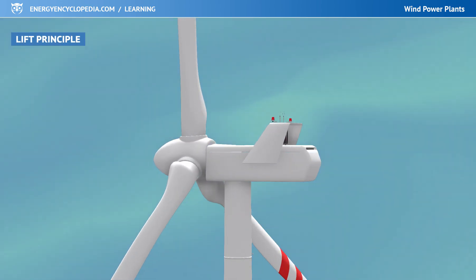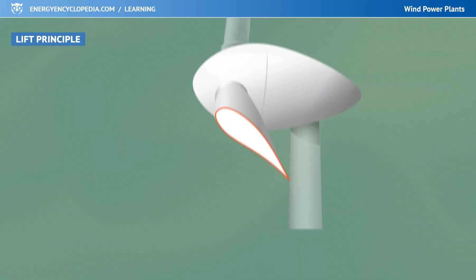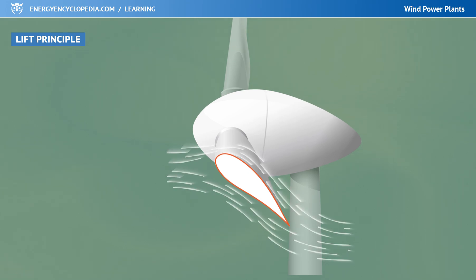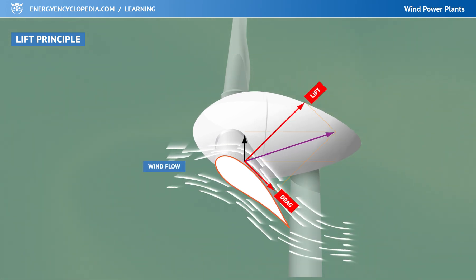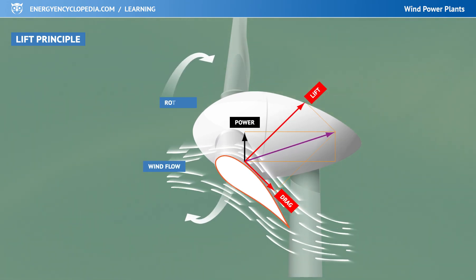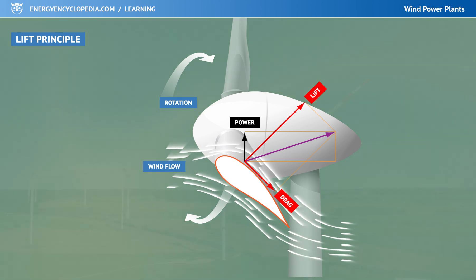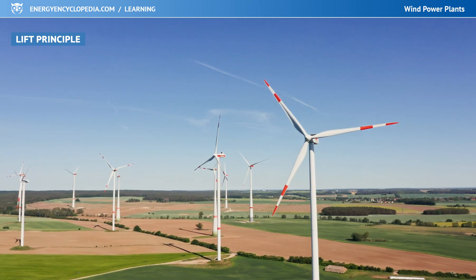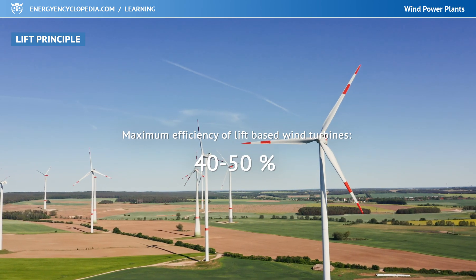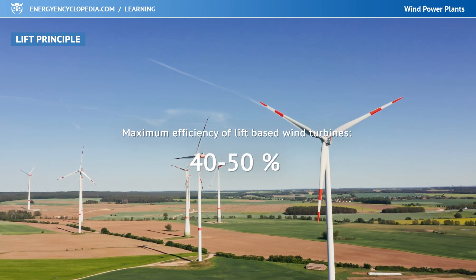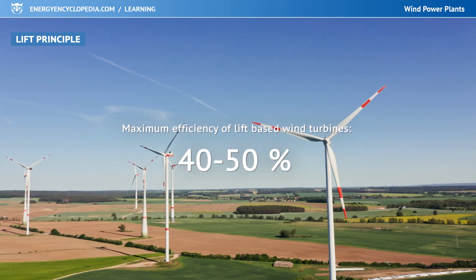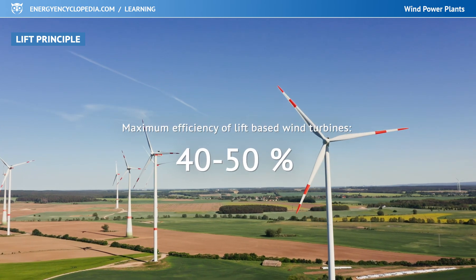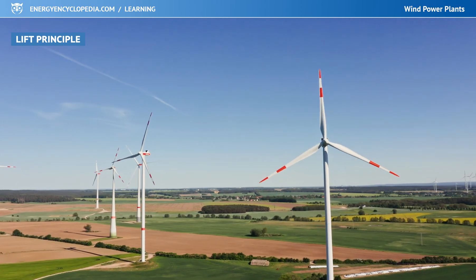Lift turbines have a blade shaped like an aircraft wing. When properly oriented to the wind, the blade will experience lift, and because it is attached to the rotor, it will spin it. Lift turbines have a much higher efficiency — around 40 to 50% — which is why almost all modern wind turbines are based on the lift principle.